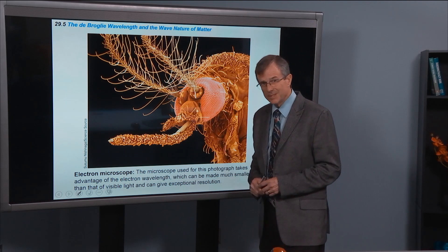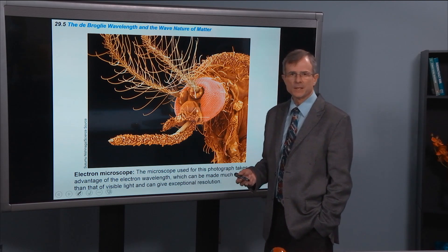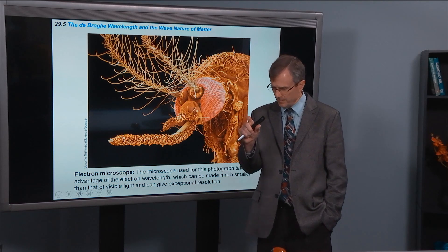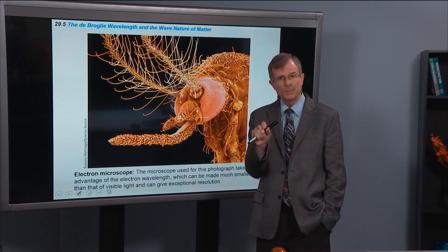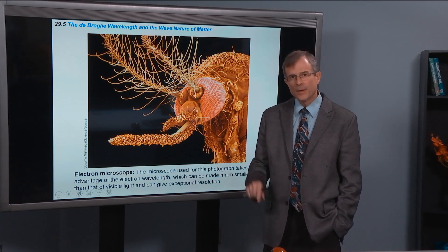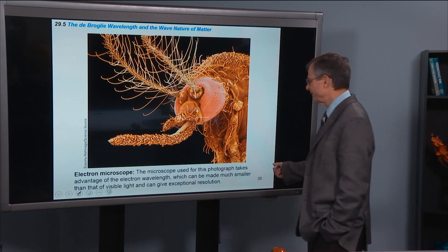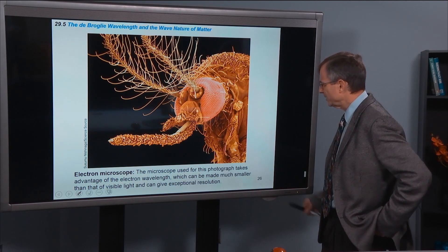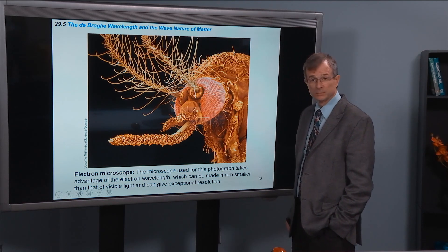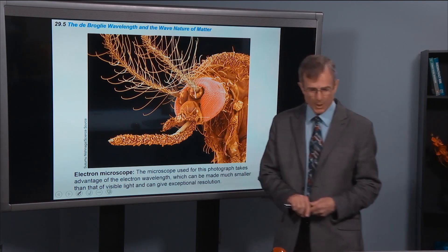Any practical applications of this? Well, yeah. Electron microscopes. Because that wavelength of about 10 to the minus 10 meters is smaller than the wavelength of light, you can resolve pictures to much higher resolution using electrons to visualize rather than light. That's the principle of an electron microscope. The microscope used for this photograph takes advantage of the electron wavelength, which can be made much smaller than that, visible light, and gives exceptional resolution. So using those electrons as waves to visualize actual objects.